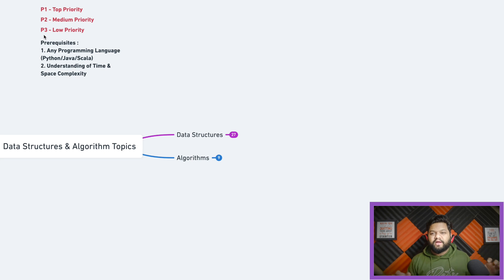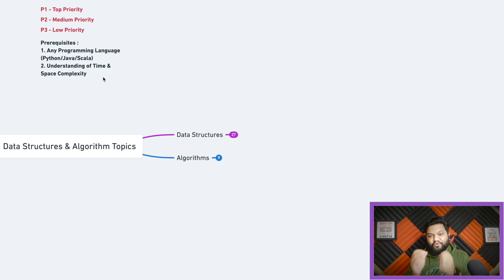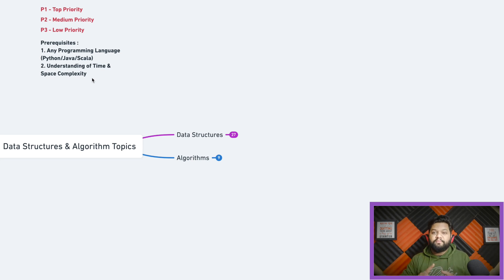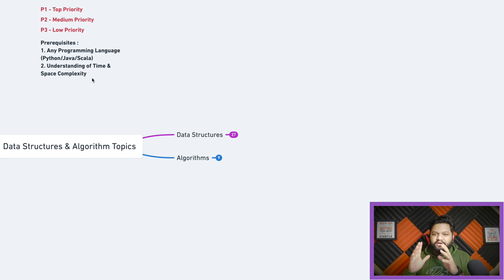P3 means low priority — you just need to get the idea of those topics without practicing hard or difficult level questions. DSA also has prerequisites: first, a programming language such as Java, Python, or Scala, and second, an understanding of time and space complexity — things like Big O notation, worst case, average case, and best case complexity. Make sure to watch till the end where I'll share an important document with common programming questions.